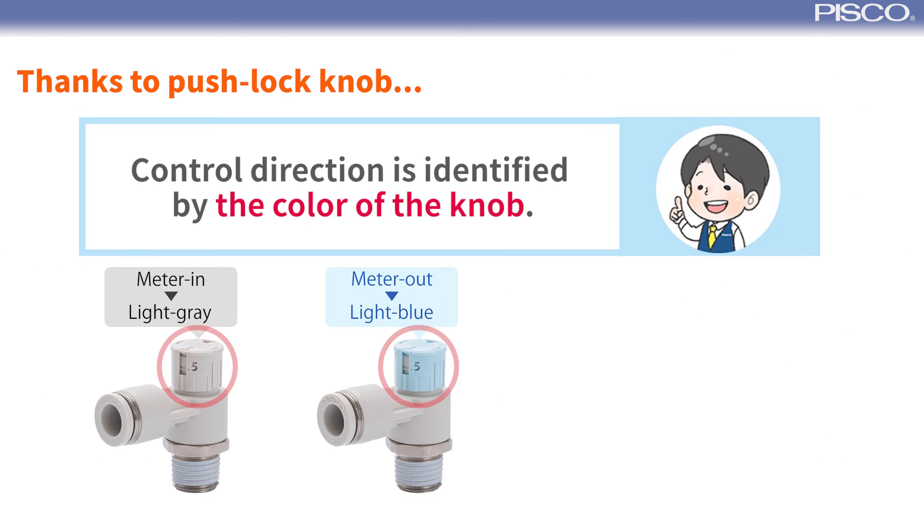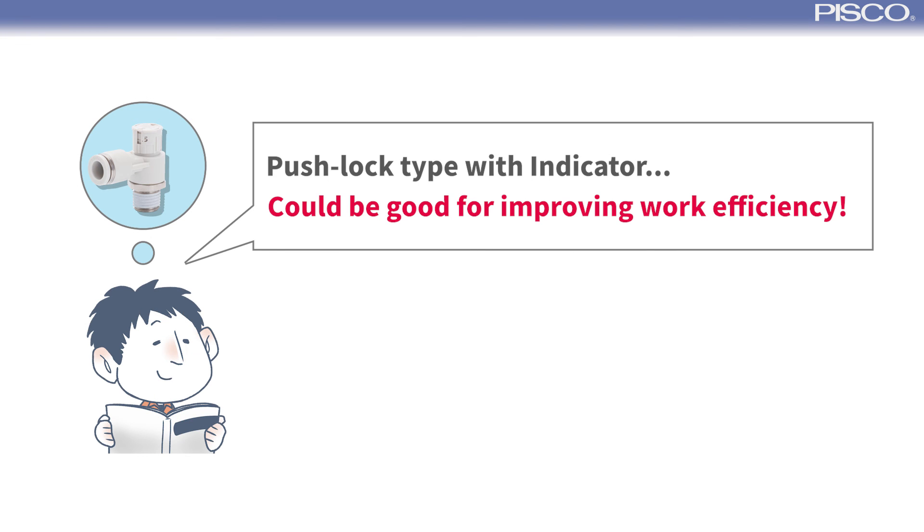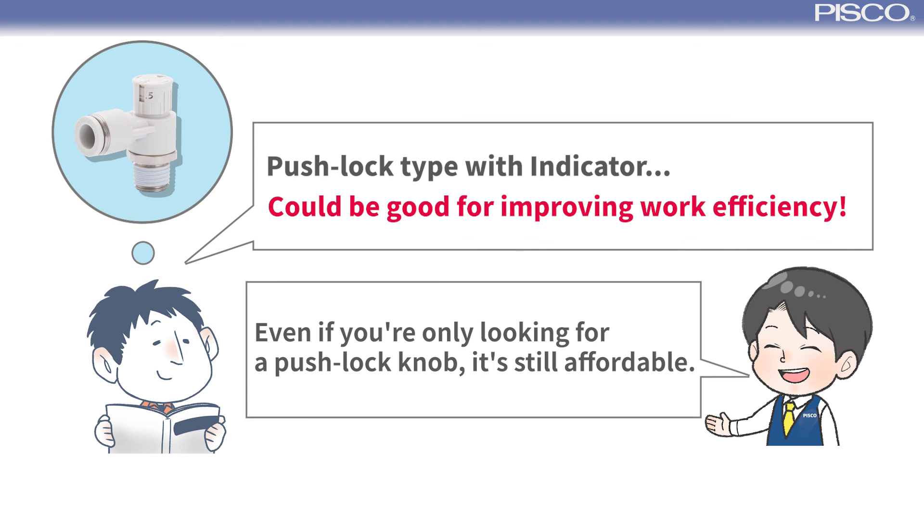The control direction is indicated by the color of the knob. Because of its compact size, the indicator type is recommended for adjustment work in tight spaces. Push lock type with indicator could be good for improving work efficiency. Even if you are just looking for a push lock knob, it's still affordable.